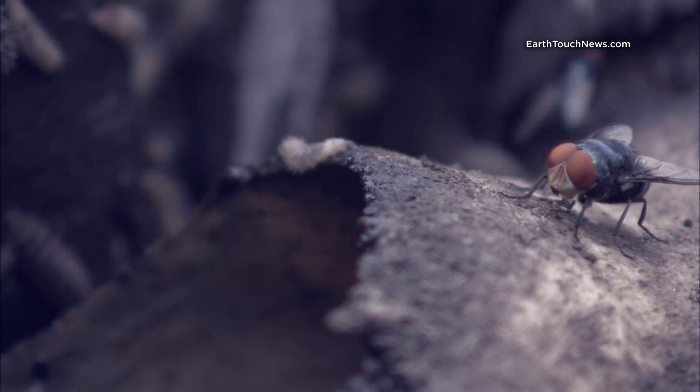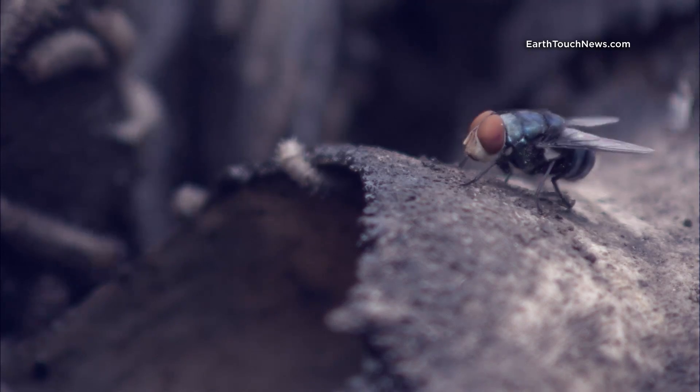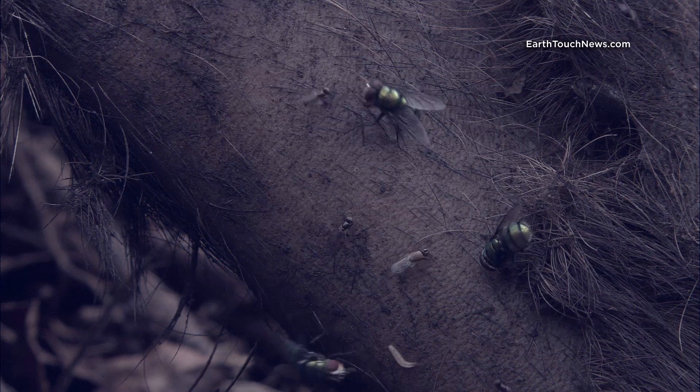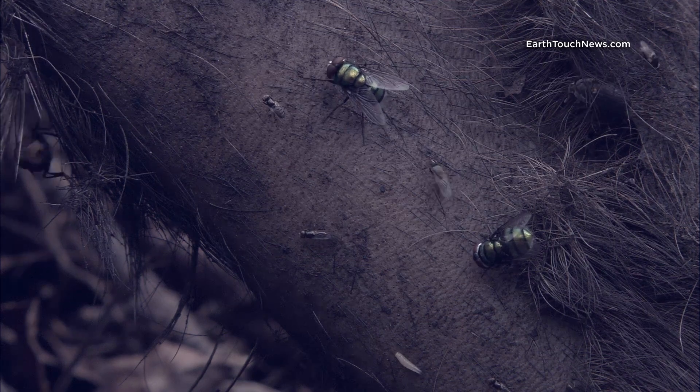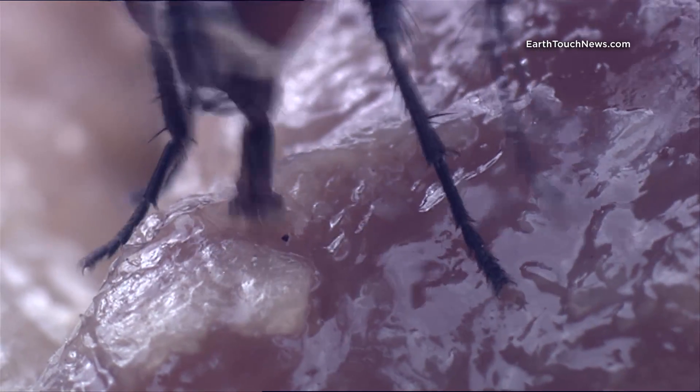First, the fly will vomit saliva onto its meal, which is laced with chemicals that liquefy flesh so they can suck it back up. Oh yeah, they also poop every four to five minutes on that same food.